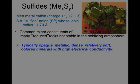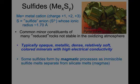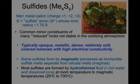Typically they are opaque, metallic, dense, relatively soft, colored minerals with high electrical conductivity. Some sulfides are formed by magmatic processes, such as immiscible sulfide melts that separate from silicate magmas. Most sulfides are formed by hydrothermal fluid — hot water with dissolved ions that precipitate sulfides at room temperature to magmatic temperatures.